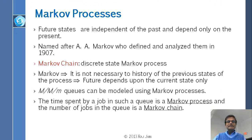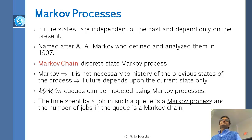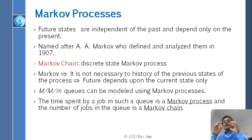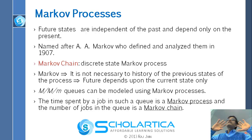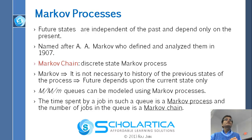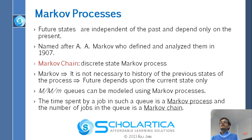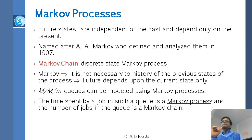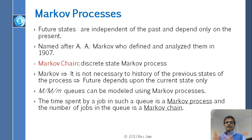Markov means future states are independent of the past and depend only on the present. It is like the memoryless property — history doesn't matter. If I just tell you the current state of the system, you can predict everything about the future — that is a Markov process. For example, if there are eight students in class today, how many will be there next Monday? That kind of prediction is Markov: current state is all that is sufficient to determine the next state. We will continue on this next time.